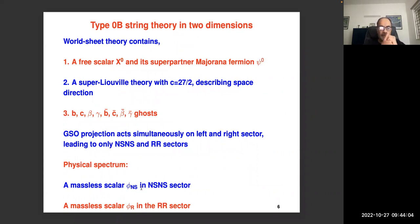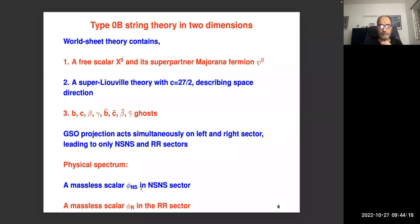Type 0B string theory is a string theory in two dimensions — a normal critical string theory with total central charge adding up to 15. The worldsheet theory contains a free scalar X_0 and its superpartner Majorana fermion ψ_0, which together give central charge 3/2. It also has a super-Liouville theory with central charge 27/2 describing the space direction. X_0 describes the time direction, the Liouville field describes the space direction — total central charge 15. It also has the usual bc, βγ and their bar counterparts as ghost fields.